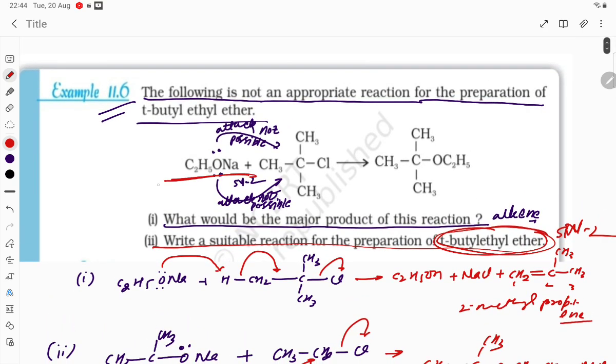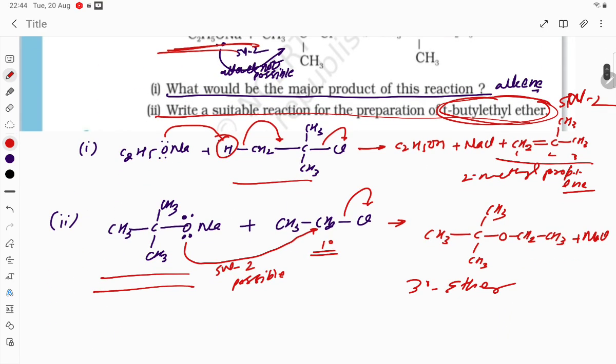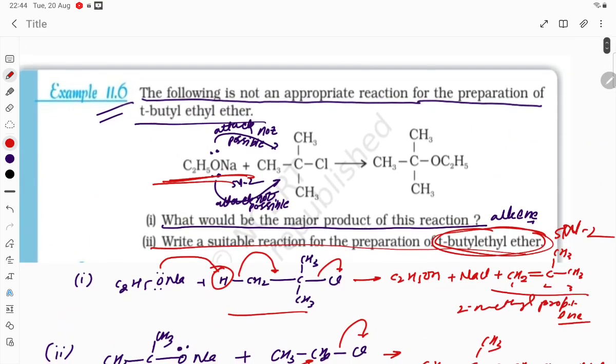Thank you very much for watching. In the first case, sodium ethoxide is the strong base that abstracts the proton from the alkyl halide to give the alkene. In the second case, tertiary sodium alkoxide reacts with primary alkyl halide by SN2 reaction to give tertiary ether. Thank you.